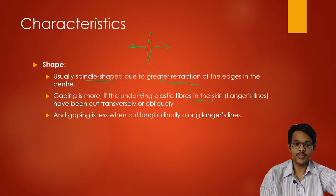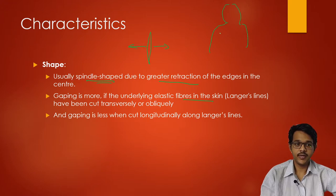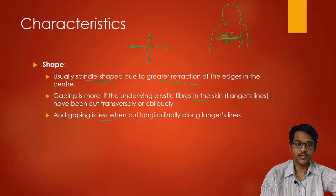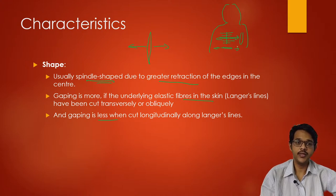Gaping is more if the wound is perpendicular to the underlying elastic fibers — the Langer's lines in the skin. In the chest region, these lines run horizontally. If the incised wound is perpendicular to these Langer's lines, retraction of the tissue will be more and gaping will be greater. If the wound is cut along the Langer's lines, gaping will be less.